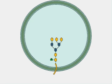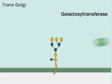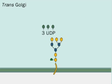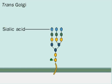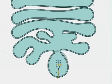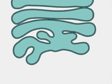Vesicles now transport the glycoprotein to the trans-Golgi cisternae. There, galactose and sialic acid join the chain. The glycoprotein is finally ready for transport to the cell's plasma membrane.